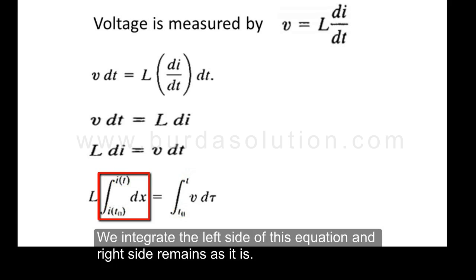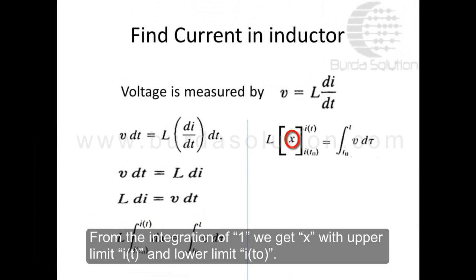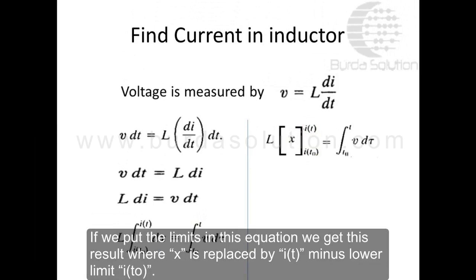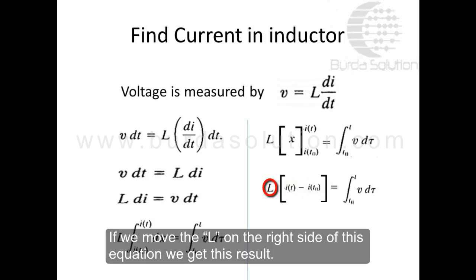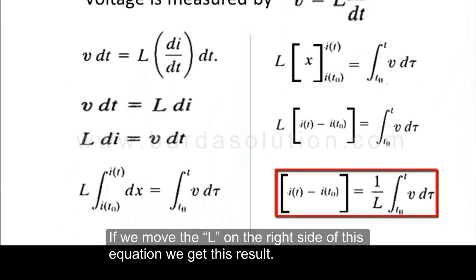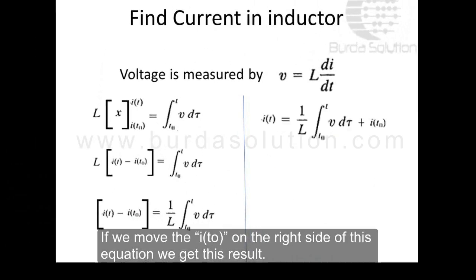We integrate the left side of this equation and the right side remains as it is. From the integration of 1, we get x evaluated with upper limit i(t) and lower limit i(t₀). Putting in the limits, x is replaced by i(t) minus the lower limit i(t₀). Moving L to the right side, and then moving i(t₀) to the right side, we get the result.